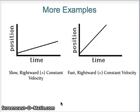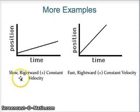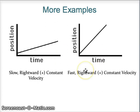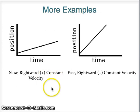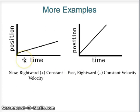Here are some examples. The graph on the left shows an object moving relatively slowly in a position-time graph, compared to the graph on the right, which has the same incremental change in axes. Both graphs show positive constant velocity, but the right graph has a steeper slope, indicating faster rightward positive constant velocity. The steeper the slope, the faster the object is moving.